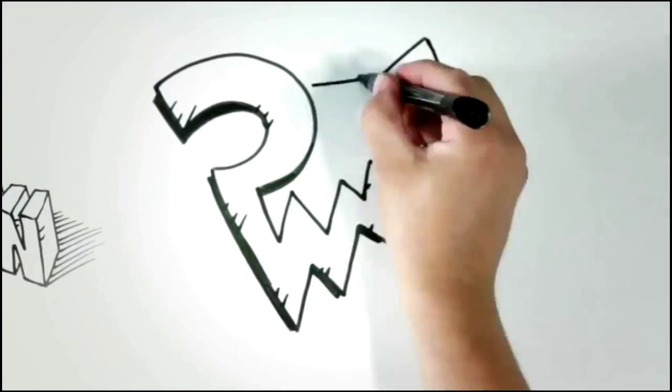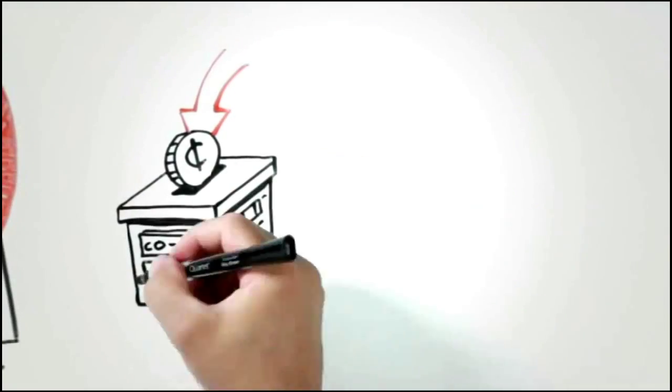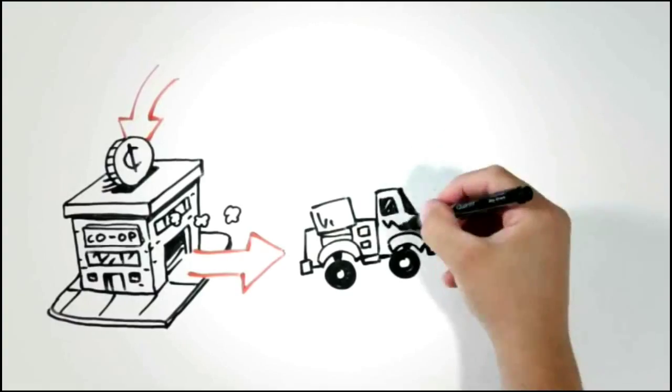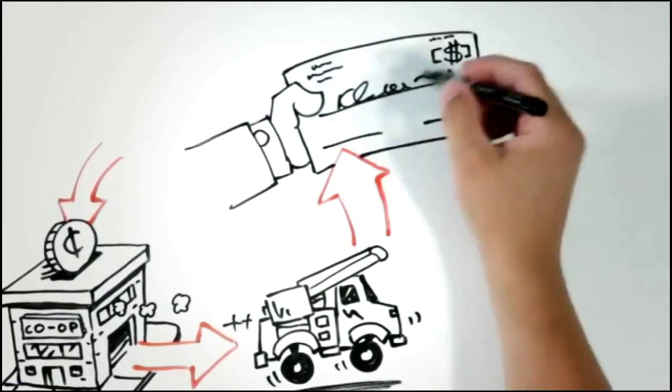First off, cooperatives are not for profit. Money comes in from members when they pay their electric bills. Money goes out to pay co-op expenses. A little bit is set aside for emergencies and the future. Any leftover is returned to members. Pretty sweet, huh?